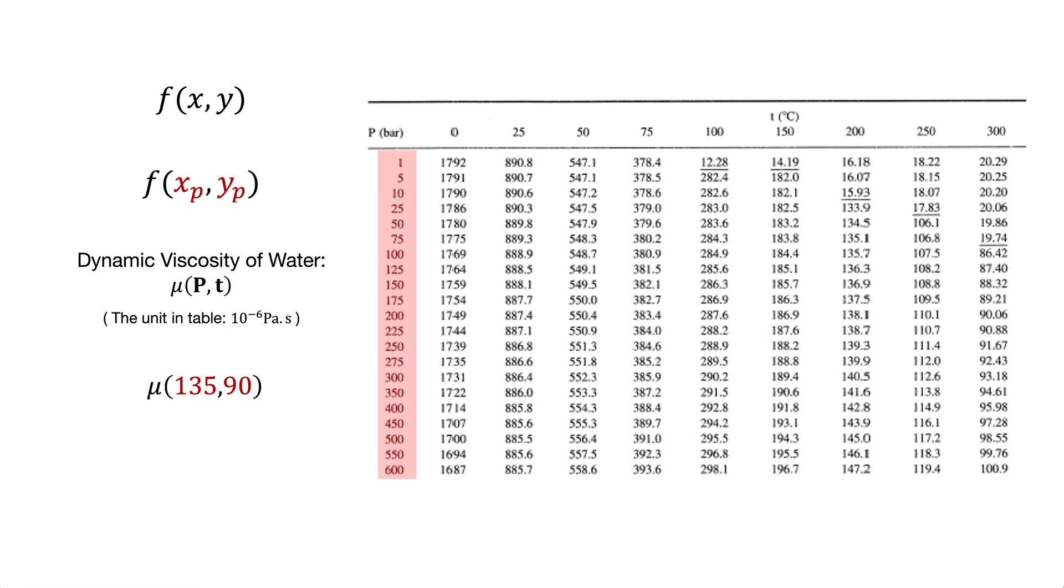When we check the headers of the rows and columns, we see that 135 and 90 do not exist. But we notice that 135 is between 125 and 150, and 90 is between 75 and 100. So our job now is to find an interpolation method in the two directions or dimensions to find the corresponding value of mu.